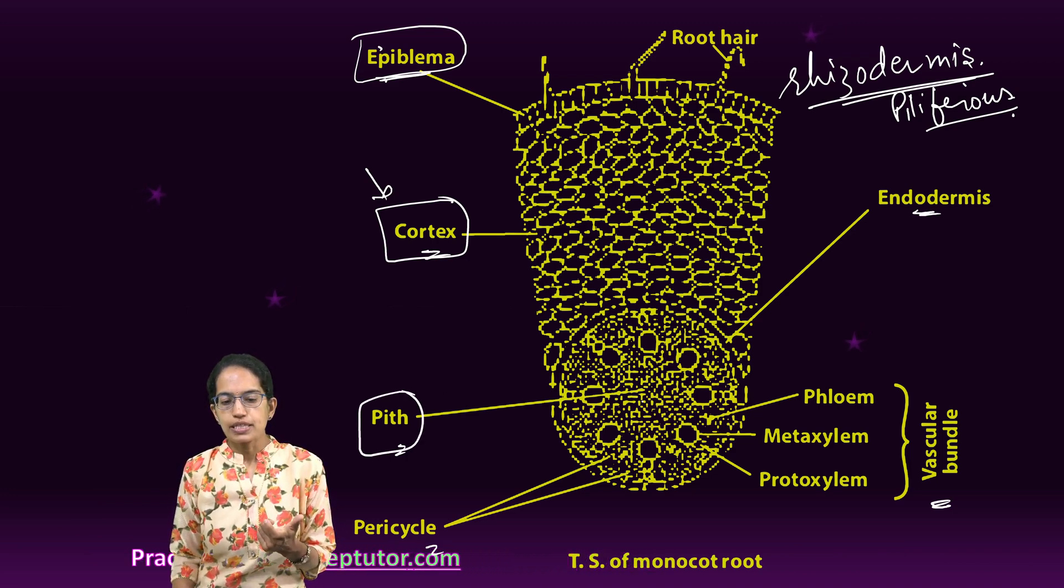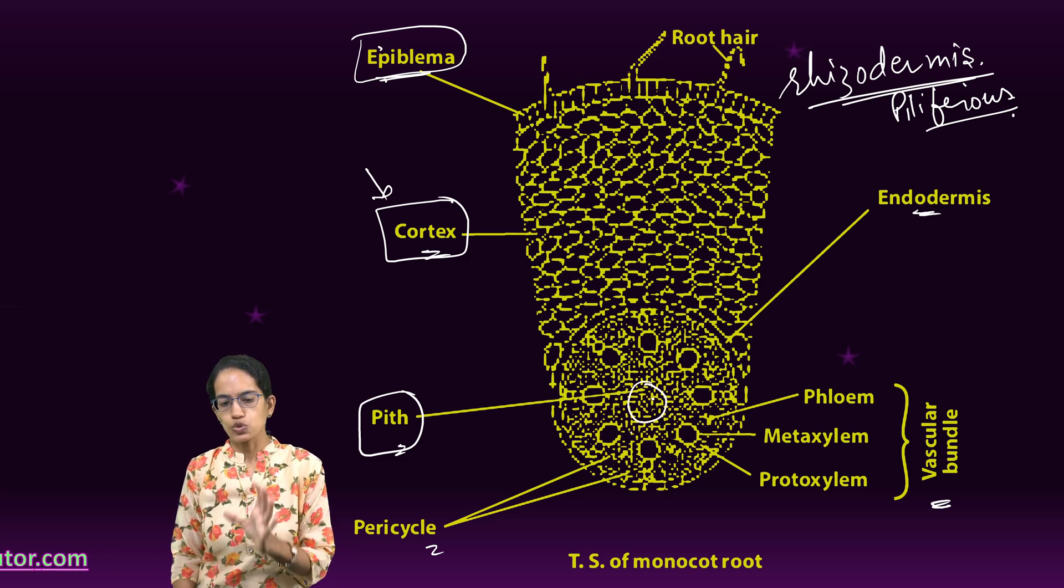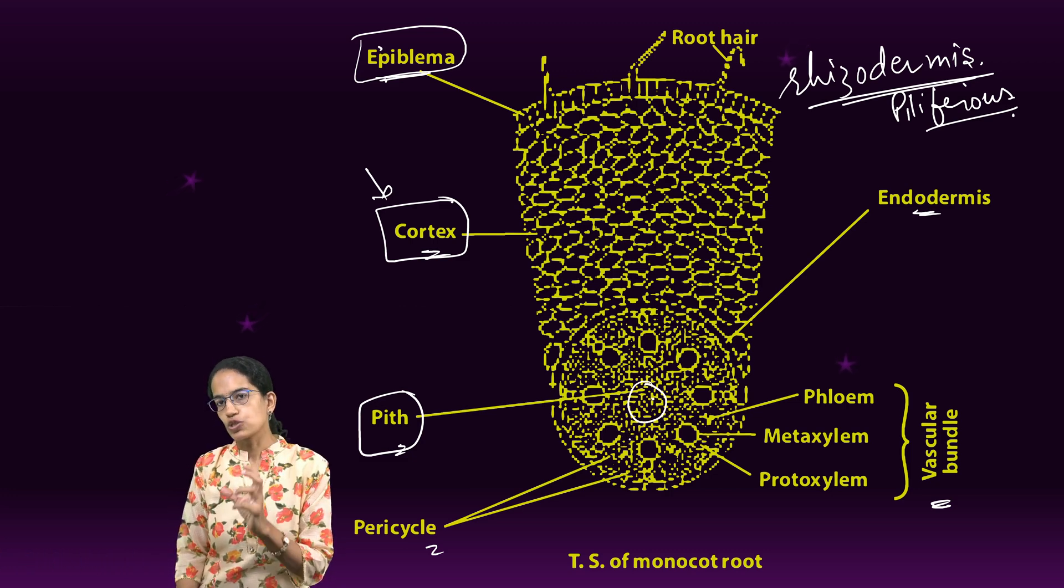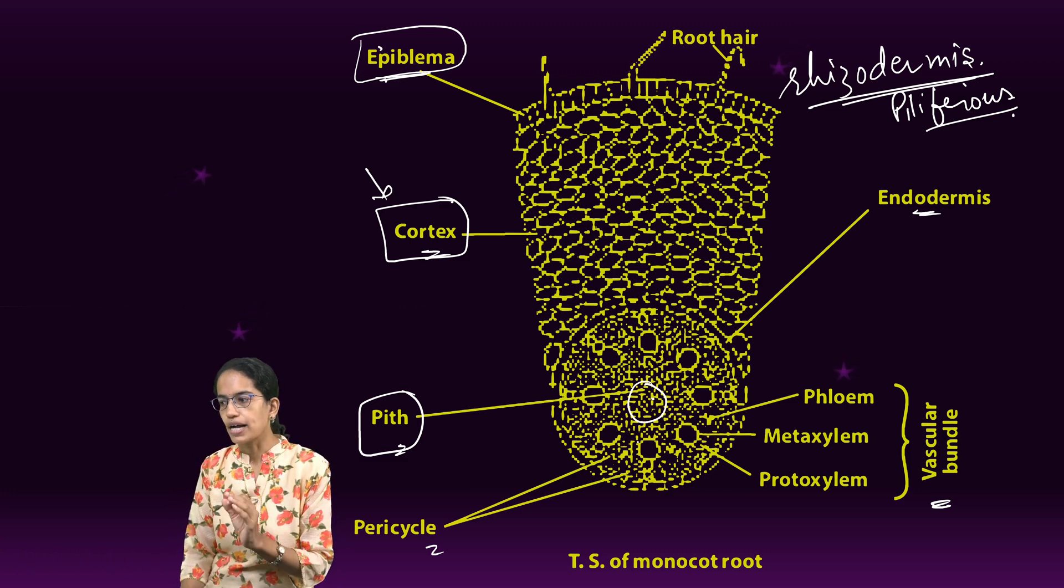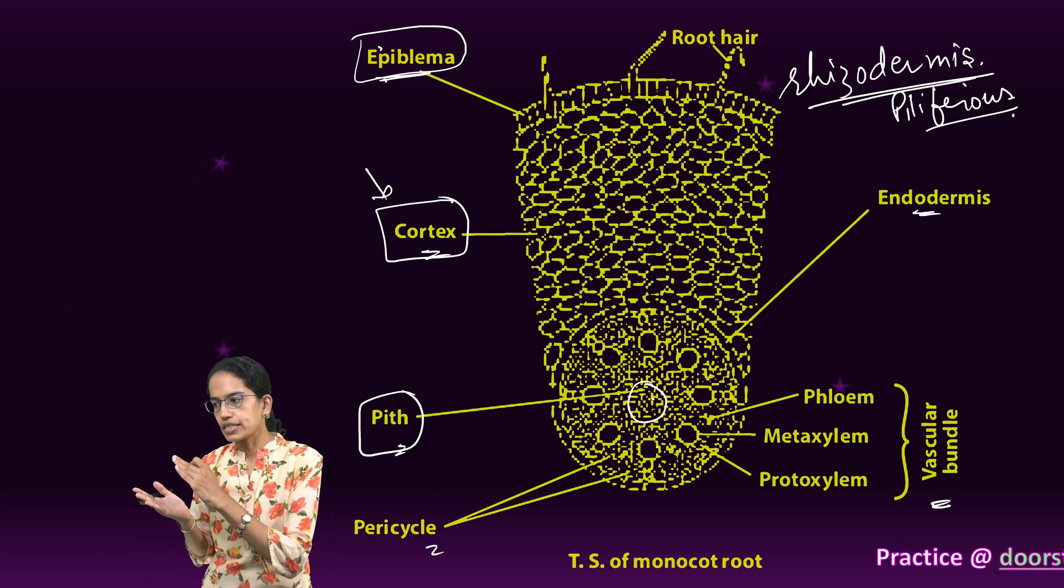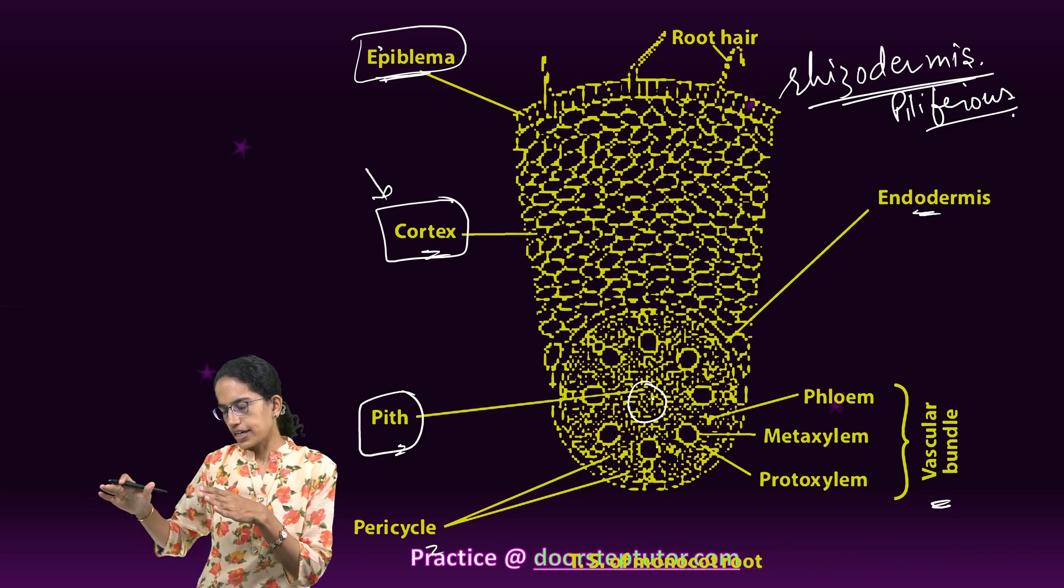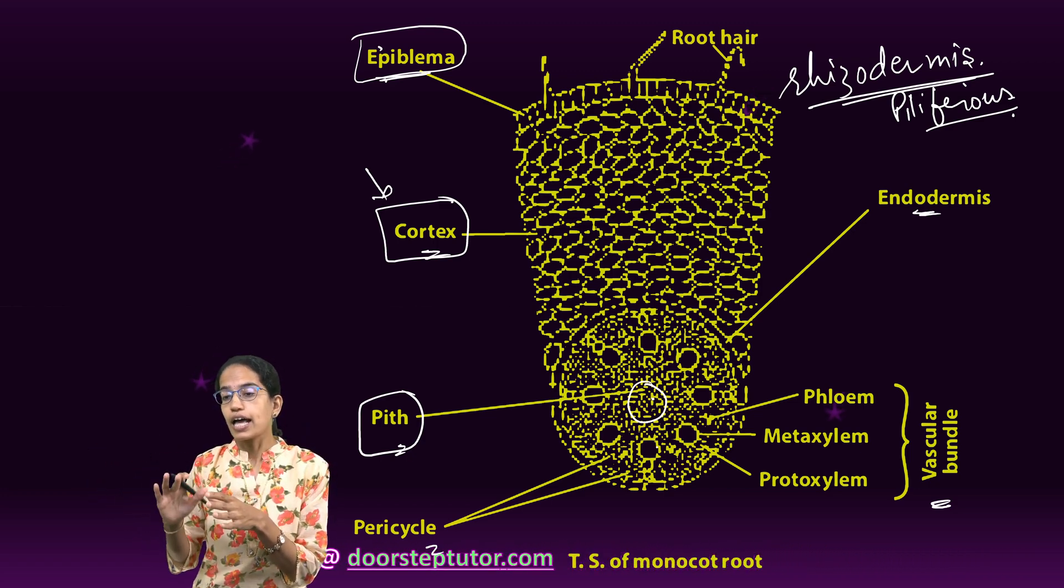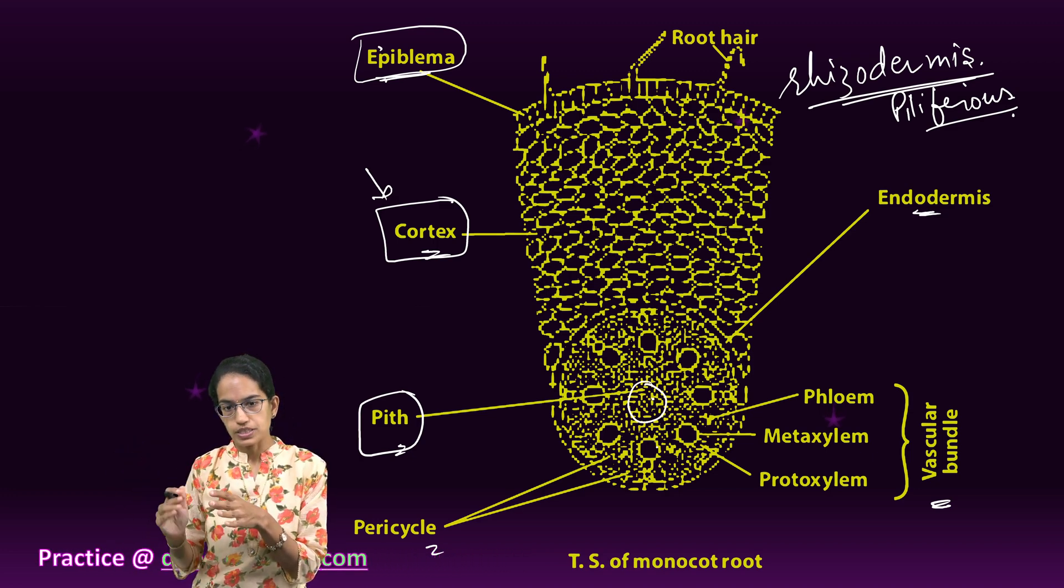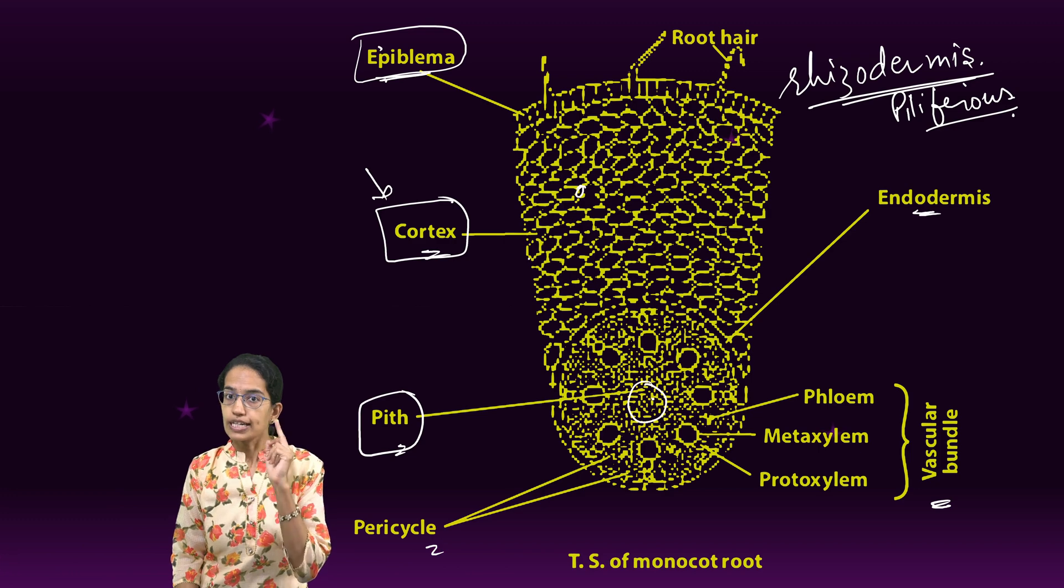The next is pith. Pith is the innermost part and the main function is to store food. This has parenchyma cells but they can be thin-walled or thick-walled. However, in the case of cortex, there are various layers and intercellular spaces which are present, mainly for exchange purposes.